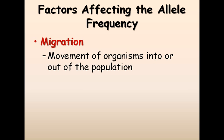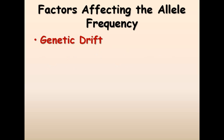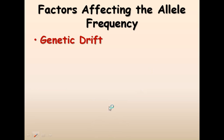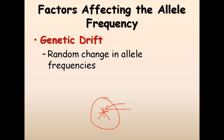Migration can also disrupt gene frequency. Migration means the movement of organisms into or out of a population. If organisms migrate into a population, new genetic information comes in; if they leave, that information is deleted. Thinking of the gene pool as a whole network — if immigration happens, new things can be added; if emigration happens, things can be deleted.